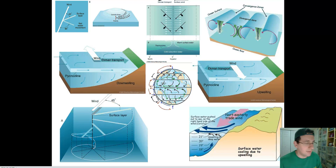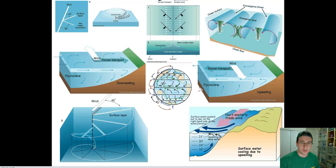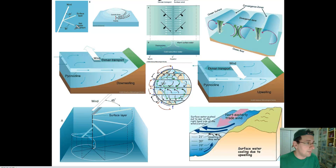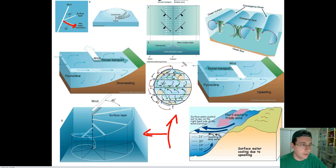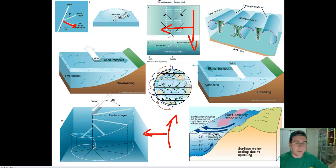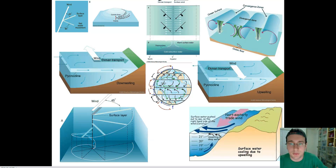If you were to put all those different directions together, the overall net movement for an infinitely deep spiral would be at about a 90-degree angle with the direction of the wind. Theoretically, mathematically, with an infinitely deep spiral, the net movement of water will be at about a 90-degree angle to the wind direction. In the Southern Hemisphere, if a wind is moving one way, the water will be pushed to the left of the wind, and that's what creates the Ekman transport.